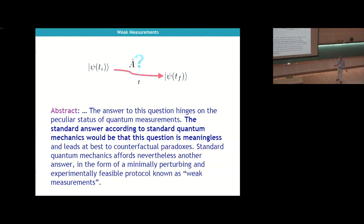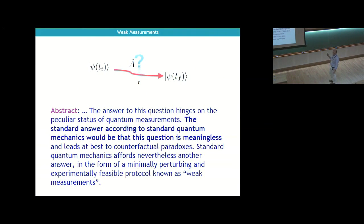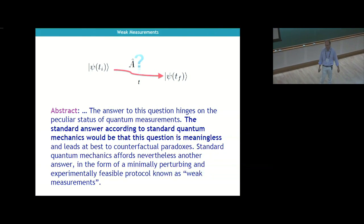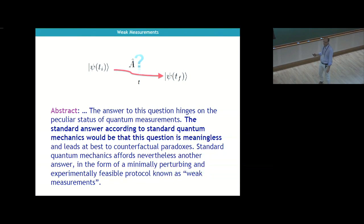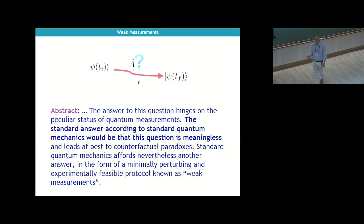The main question we'll be interested in is: what is the value of a given physical property of a quantum system at some intermediate time between the system preparation and its final detection? The idea is we prepare the system in an initial state, then the system evolves. There's a deterministic equation — Schrödinger's equation — that gives you the evolution, and then at the end we make a measurement of some observable. The question is: can I say something about the value of a property at some intermediate time?